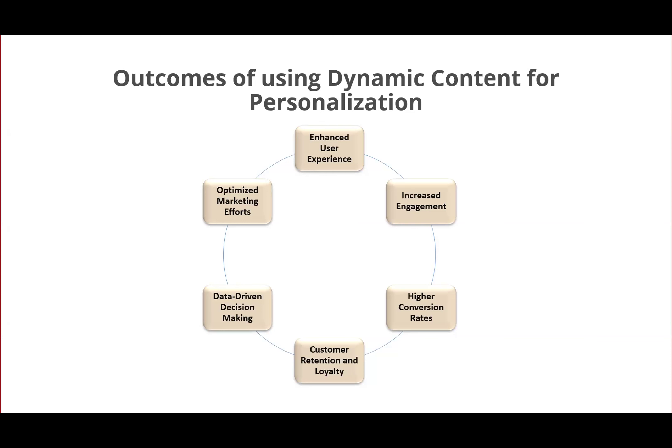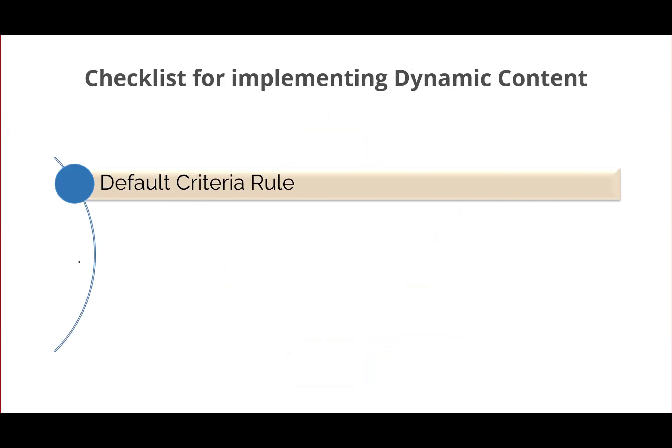All these points are interrelated. Now, the checklist required for implementing Dynamic Content: First, make sure you have a default criteria rule. Imagine a recipient sees nothing because they don't meet any criteria — make sure you have a generic default version of the email for them under the default criteria in the dynamic content.